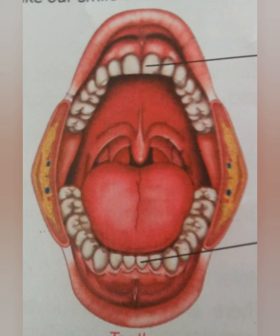There are 28 teeth in this permanent set. Four more teeth called wisdom teeth come out between the age of 20 and 25. When we are 20 to 25 years old, we will have four more teeth that are called wisdom teeth. All these teeth grow out of gums which cover the jaw bones.